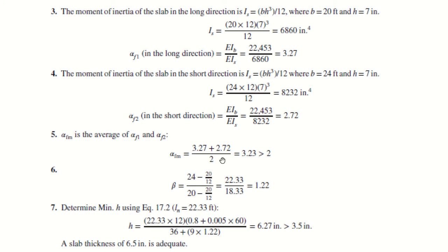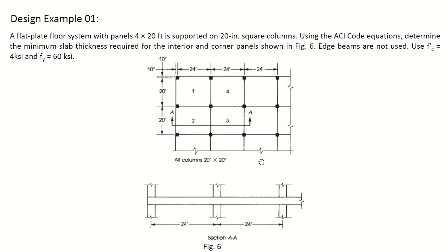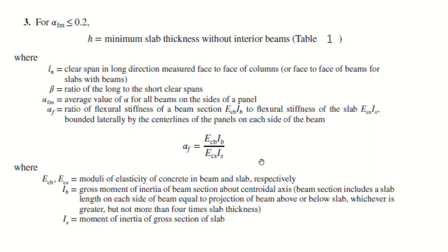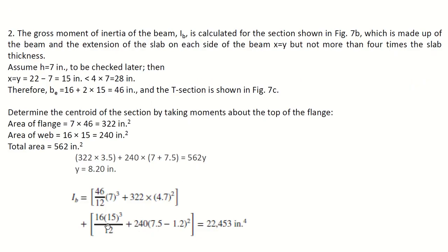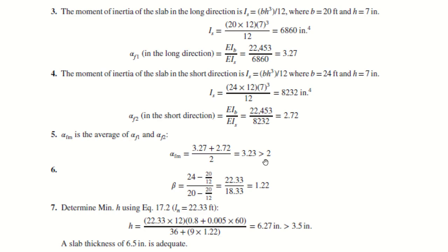Using Is = bh³/12 for the slab and computing alpha_f1 = EIb/EIs = 3.27 in the long direction, and alpha_f2 = 2.27 in the short direction. The average alpha_fm = (3.27 + 2.27)/2 = 2.77, which is greater than 2. Using Equation 2 for alpha_fm greater than 2, with ln = 22.33 feet, h = 6.27 inches, which exceeds the minimum of 3.5 inches. Therefore, a slab thickness of 6.5 inches is adopted.